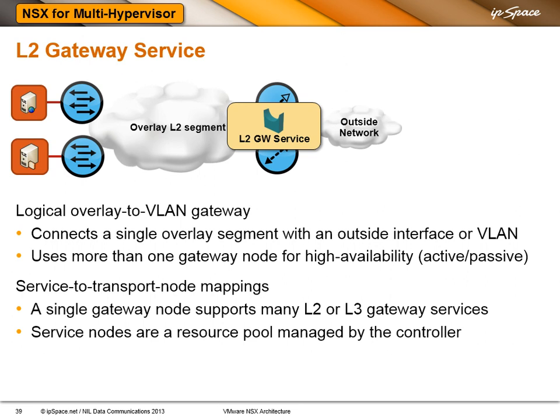You can deploy layer 2 or layer 3 gateways on the gateway nodes. The gateway nodes are generic resources that you can use to implement numerous gateway services, and a single gateway node can run numerous gateway services. In the layer 2 world, each gateway service connects one overlay network to one VLAN — so there's a one-to-one mapping. You can use more than one gateway node for every layer 2 gateway service for active-passive high availability. You configure the gateway service, associate it with one or more gateway nodes, and it runs on one of them. If that one fails, it flips over to the other one.